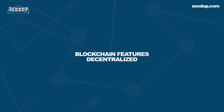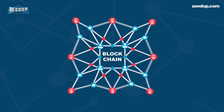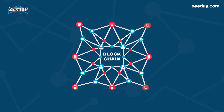Blockchain features: Decentralized — blockchains are decentralized in nature, meaning that no single person or group holds the authority of the overall network, and no one can modify it on his or her own.